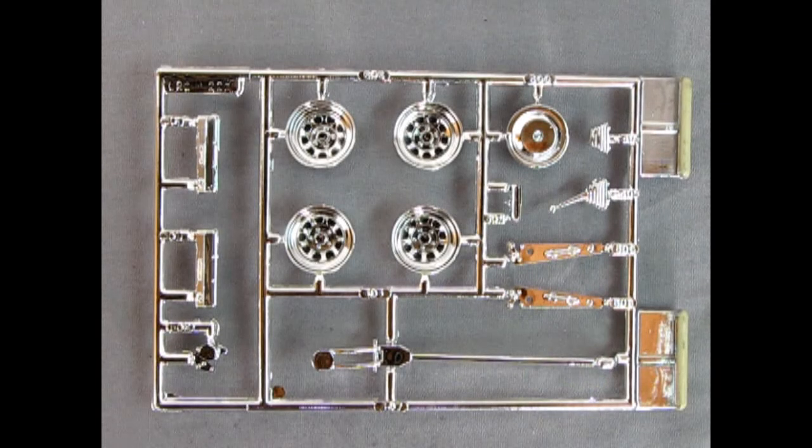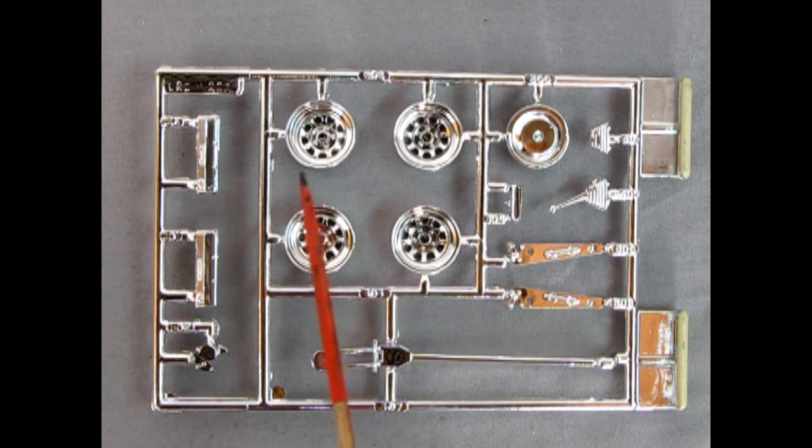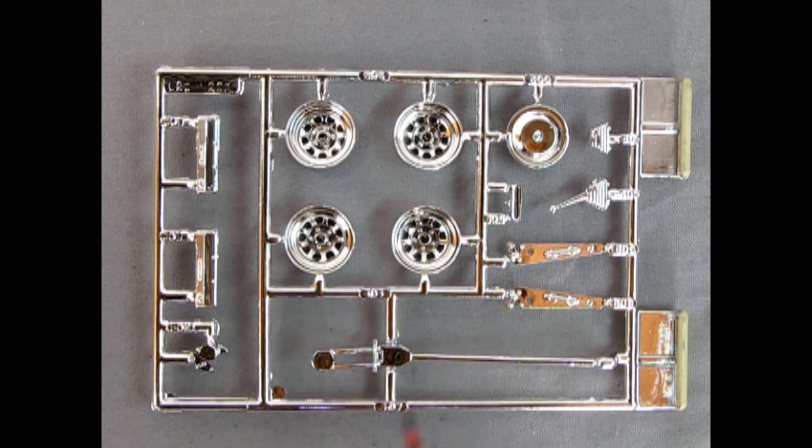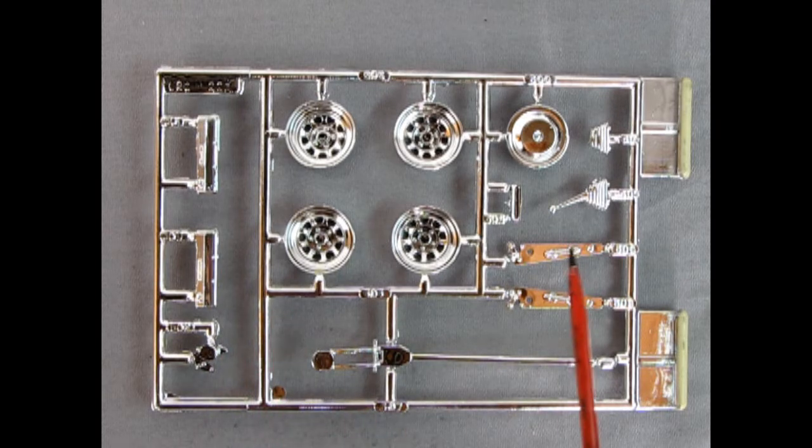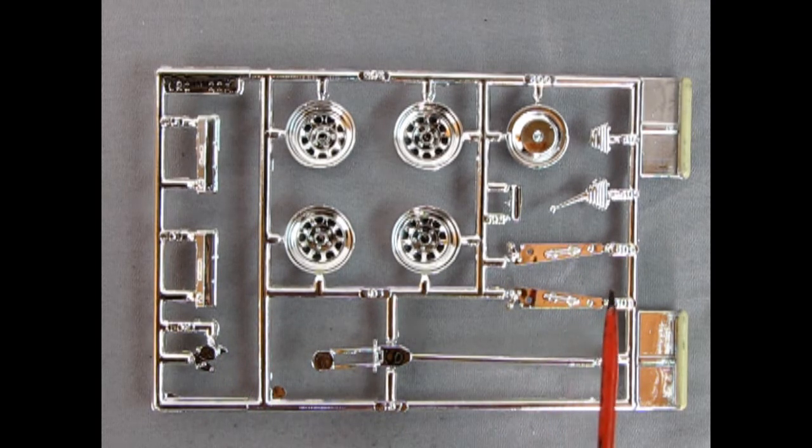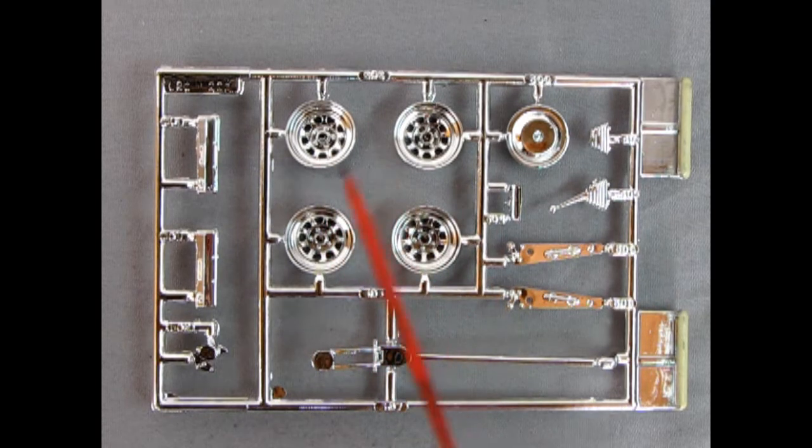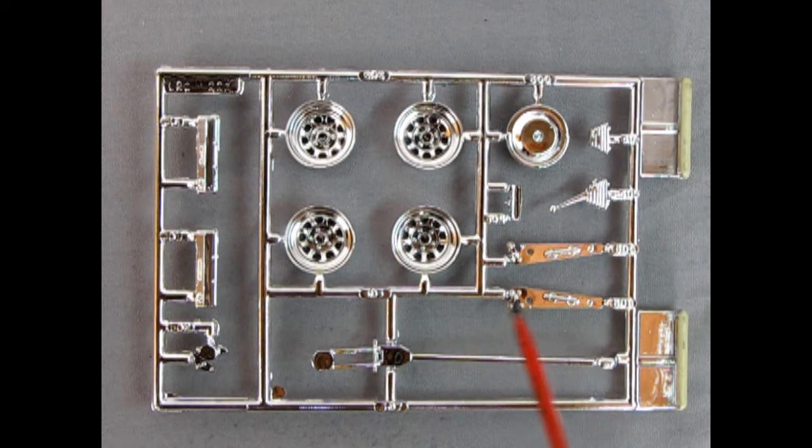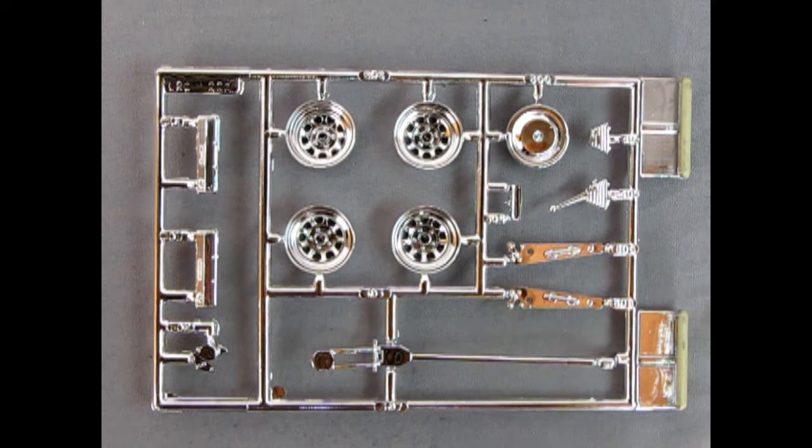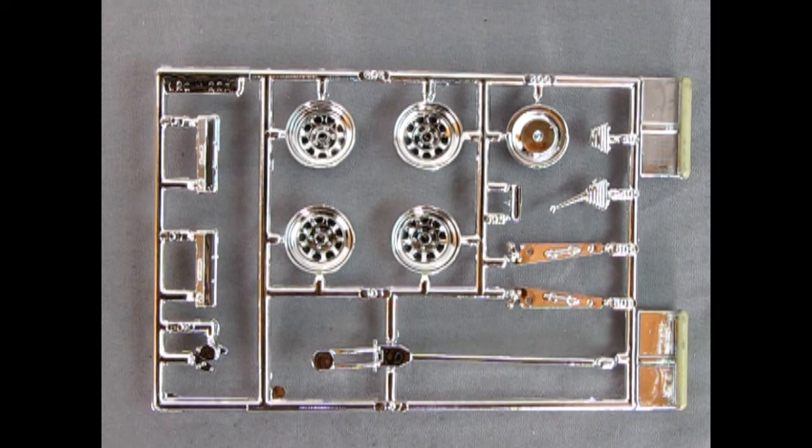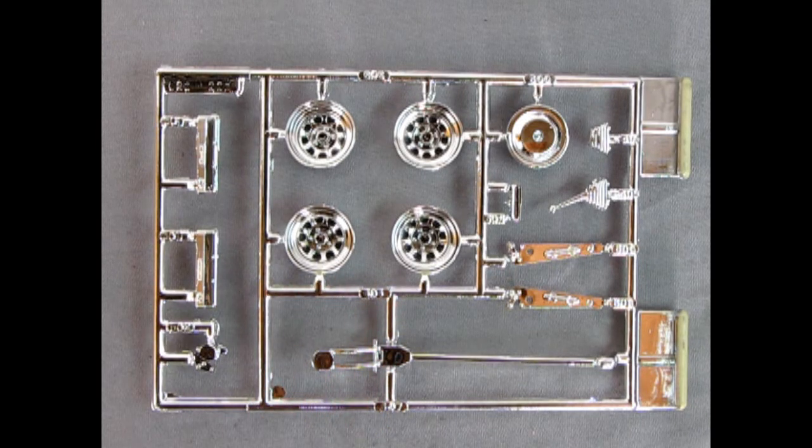And here we have our chrome parts tree. I do believe this is also generic amongst the NASCAR kits. They all seem to have these same kind of wheels, as well as the jack and the air cleaner and the valve covers. Now, maybe correct me if I'm wrong, but most of these are actually stripped of the chrome and painted body color or something like that. On the box, it shows these as being painted black. You can easily strip the chrome with Easy Off Oven Cleaner and get it ready for that black paint job.